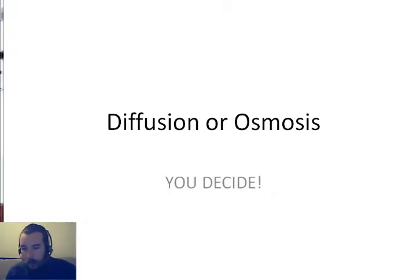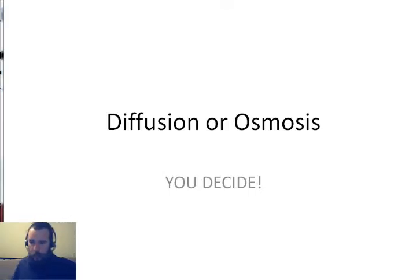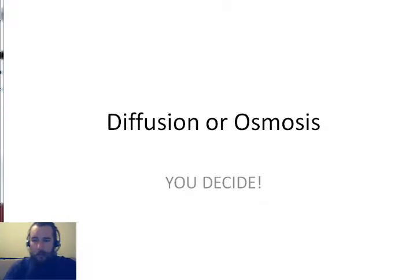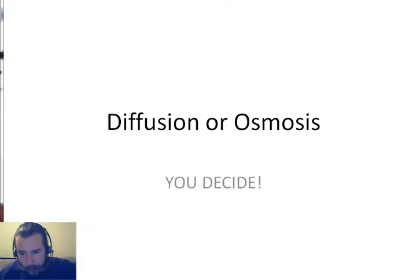Alright boys and girls, it's time to play diffusion or osmosis. You decide how will the cell reach equilibrium. You all know the rules: diffusion is plan A for the cell, where the molecules themselves move from an area of high concentration to an area of lower concentration so the cell will be in equilibrium.